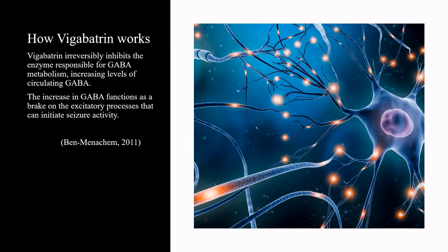Vigabatrin irreversibly inhibits the enzyme responsible for GABA metabolism, increasing levels of circulating GABA. The increase in GABA functions as a brake on the excitatory processes that can initiate seizure activity.